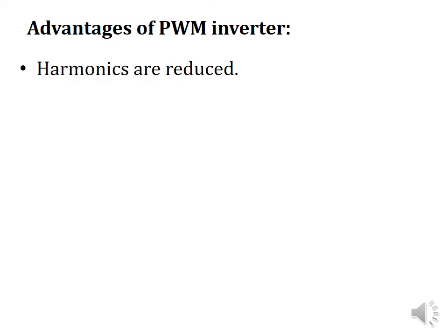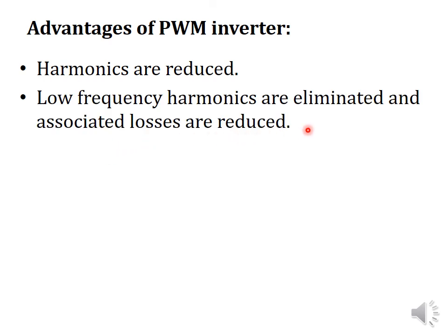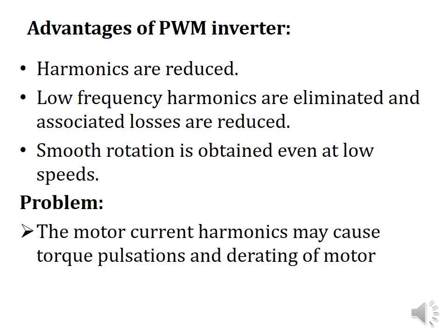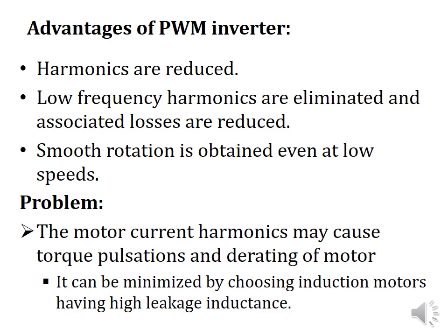The advantages of a PWM inverter for controlling an induction motor: harmonics are reduced, low-frequency harmonics are eliminated and the associated losses are reduced, and smooth rotation is obtained even at low speeds. However, it does have one drawback: motor current harmonics may cause torque pulsations and derating of the motor. To minimize the motor current harmonics, we can use an induction motor with high leakage inductance.